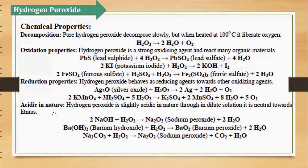Then is the acidic nature of hydrogen peroxide. Hydrogen peroxide is slightly acidic in nature, though in dilute solution it is neutral towards litmus. Jab hum concentrated form mein lete hain hydrogen peroxide ko tab wo acidic hai, lekin dilute mein yeh neutral hai. Example lete hain: sodium hydroxide ke saath react karate hain, to sodium peroxide plus water aata hai. With barium hydroxide, hydrogen peroxide gives barium peroxide and water. Sodium carbonate ke saath hydrogen peroxide gives sodium peroxide plus carbon dioxide plus water.